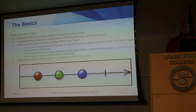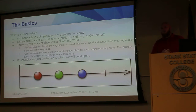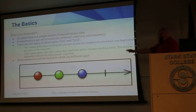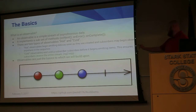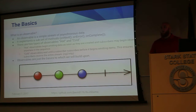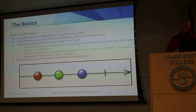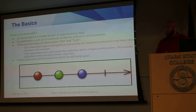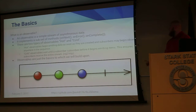So the basics: what is an observable? An observable is a simple stream of asynchronous data — that little line with dots we reference a lot. Each one of those dots represents events, data, or any kind of emission over the stream. It implements a subset of methods: on next, on error, and on complete.